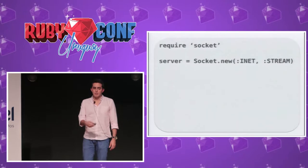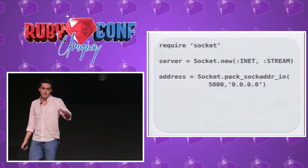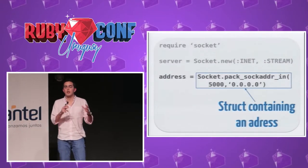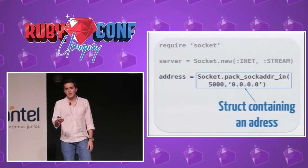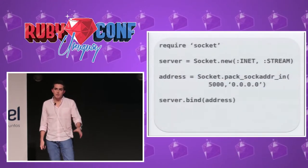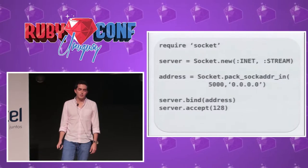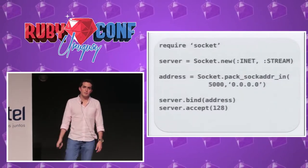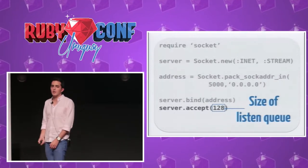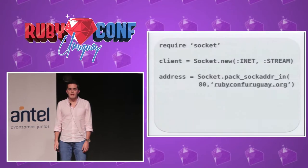We've seen many calls to the operating system. We give an address to pack_sockaddr_in(), which returns a data structure containing a port and a host. Then we call the bind() method, give the address, and start to accept connections. The accept() method receives a parameter for the size of the connection queue we are ready to receive.